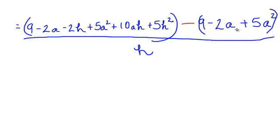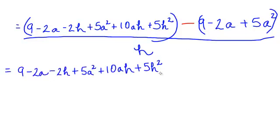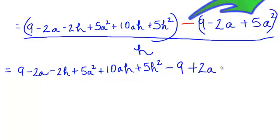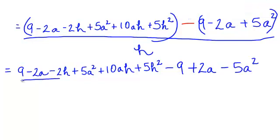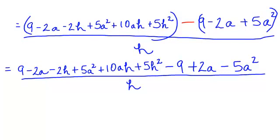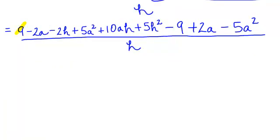Now, we need to distribute this negative and distributive property. I will have minus 9 plus 2a minus 5a squared, all of that divided by h. Well, let's see if we have any like terms. I have a positive 9 and a negative 9 that will cancel. I have a negative 2a and a positive 2a that will cancel. I have a positive 5a squared and a negative 5a squared that will also cancel.